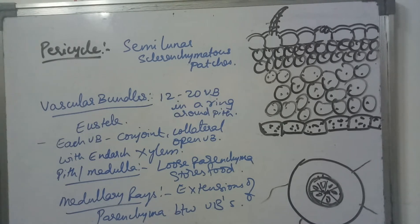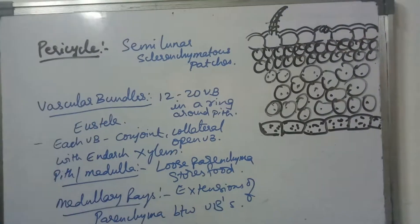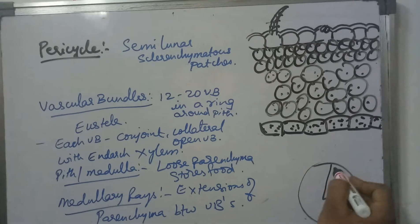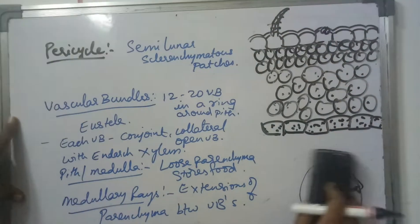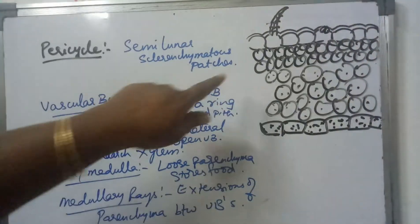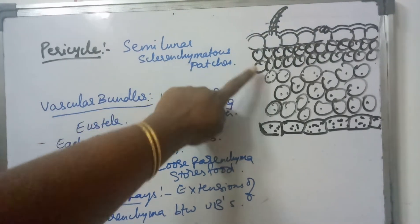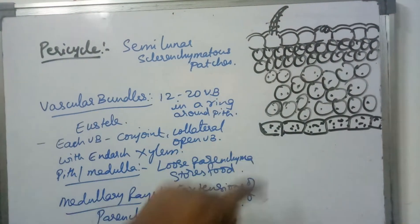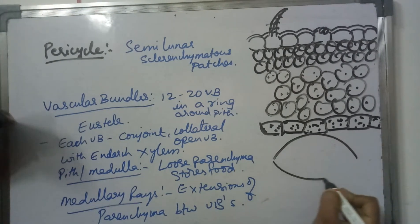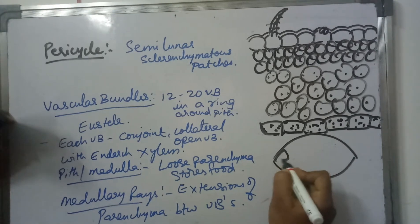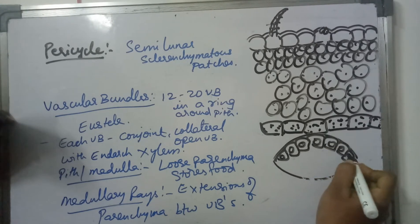In the sector enlarged diagram, we can see trichomes, cuticle, epidermis, hypodermis, general cortex, endodermis, and then pericycle. Pericycle is in the form of semilunar sclerenchymatous patches — half-moon shaped sclerenchymatous patches.